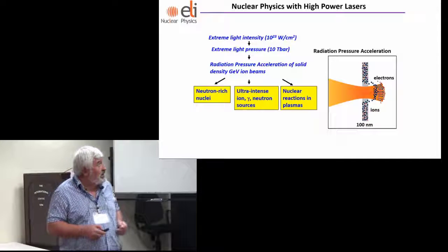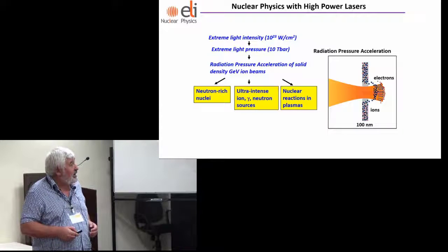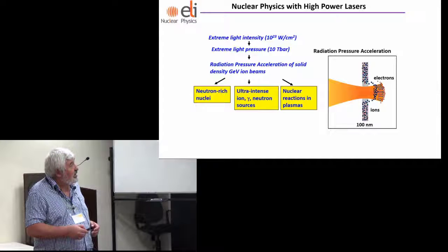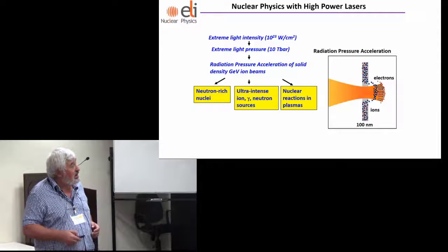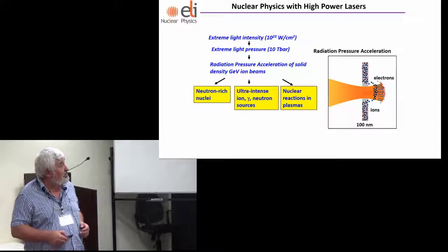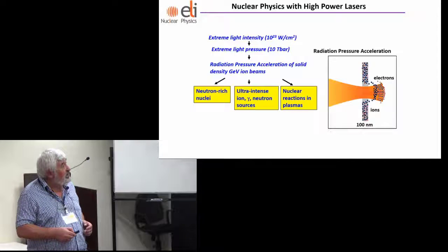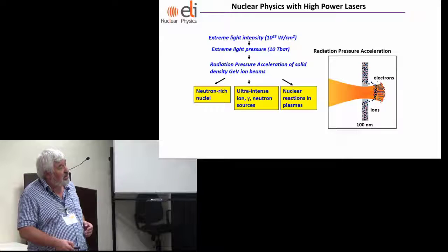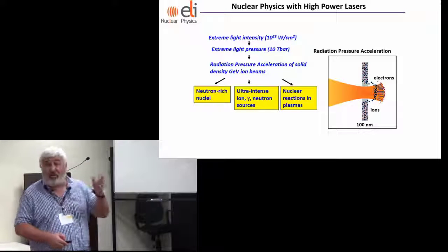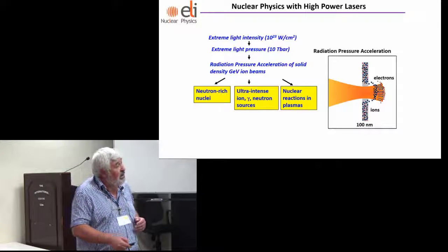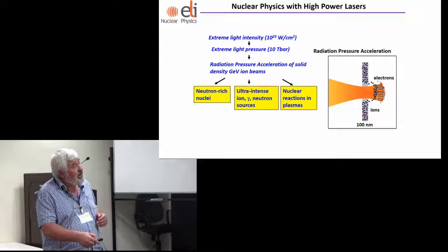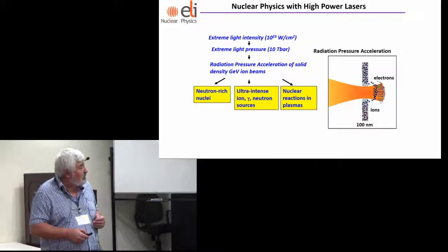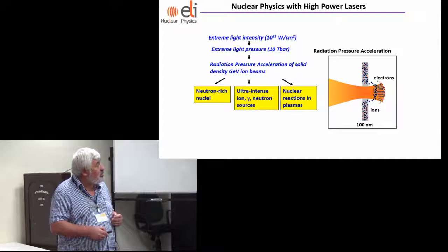With this you can accelerate particles, electrons or ions. The laser intensity at this power is expected to be 10 to the 23 watts per square centimeter, which converted in light pressure is about 10 terabar. With such a pulse, if you shoot on a nanometer foil you blow up all the electrons creating a huge electric field drawing up the ions behind them. You get beams which scale with the Avogadro number, and with this we want to study neutron-rich nuclei.